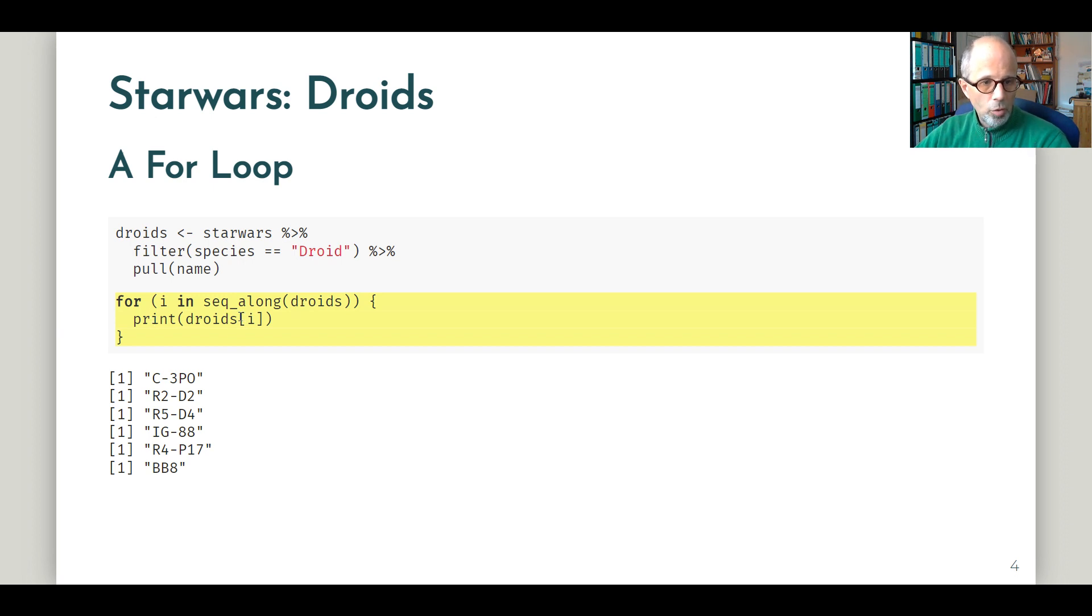Note how inside the for loop I make use of this iterator i. In each run, on each iteration of the loop, I access the i-th element of the droids vector and print the name to the screen.